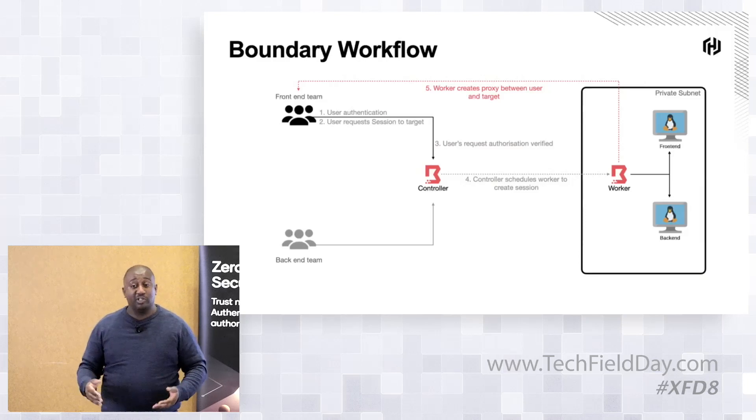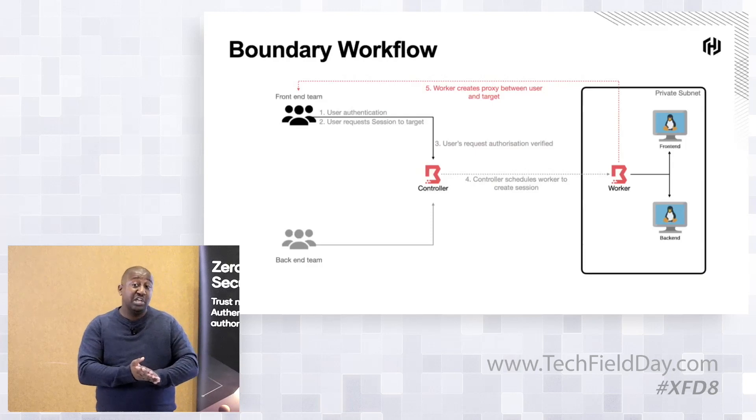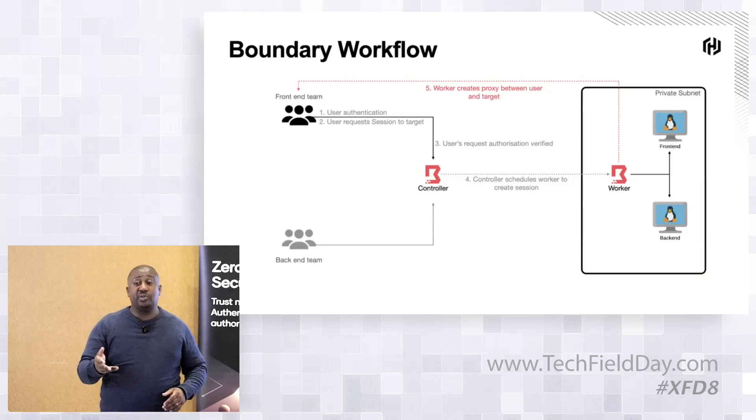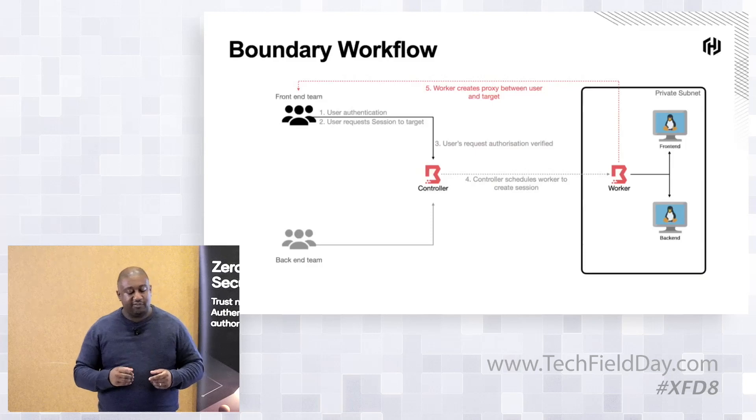All of that is going on in the background — as an end user I don't know about it. I just know my credentials to get into Azure, I use that to log into Boundary, and I connect to the infrastructure I'm supposed to access. If I request a session to something I'm not authorized to do, I get a permission denied. The way permissions work is we can essentially do access-based enumeration — only certain people are authorized to even see a list of targets, let alone connect to them.